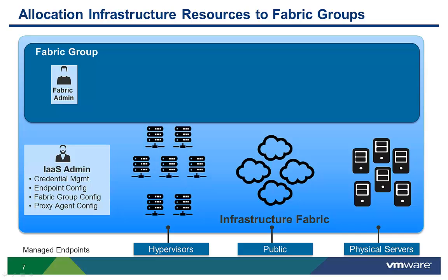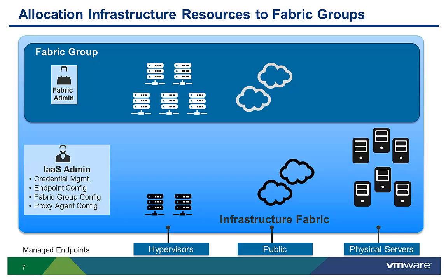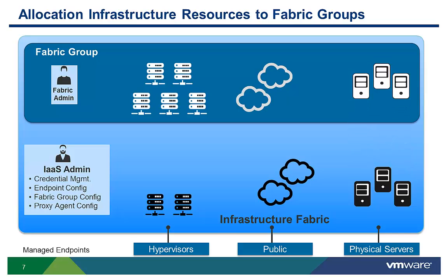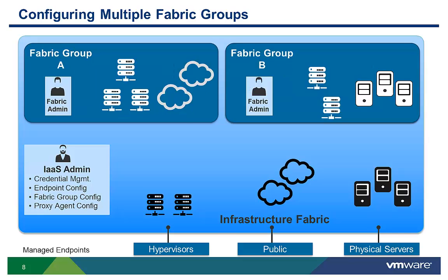In addition to assigning the fabric administrator, the infrastructure administrator then assigns resources to the fabric group from the collection of discovered resources. Fabric groups can also be used to segregate resources used by one organizational group from another. Many companies will likely only have one fabric group; however, if you need to make sure that one tenant or business group cannot have VMs on the same host as another tenant or business group, you can allocate the resources from different fabric groups.